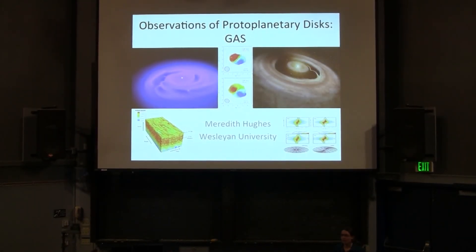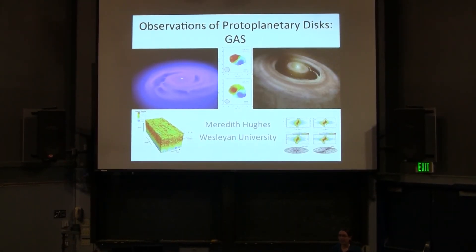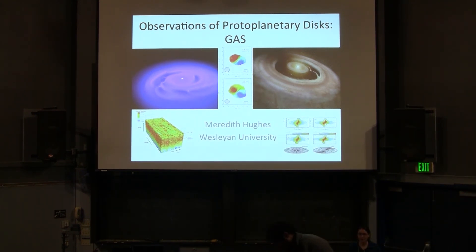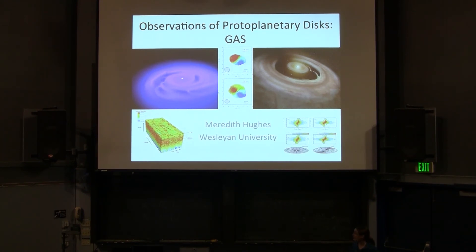Let's start off where we left off yesterday. I hope you guys basically know what to expect by now. I'll be talking about observations of protoplanetary disks again, but today I'll be focusing on the gas component of the disks, where most of the mass is located and what controls most of the dynamics. I encourage you to interrupt me with questions — you asked a lot of good questions yesterday, so please continue to do that today.